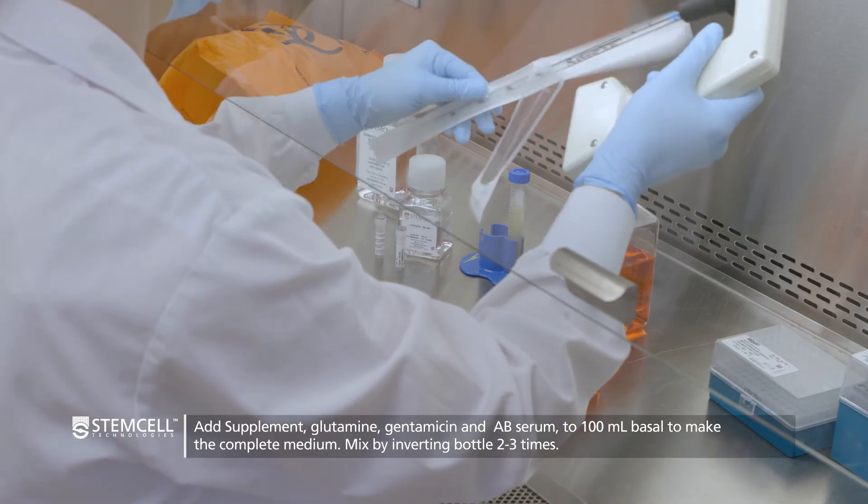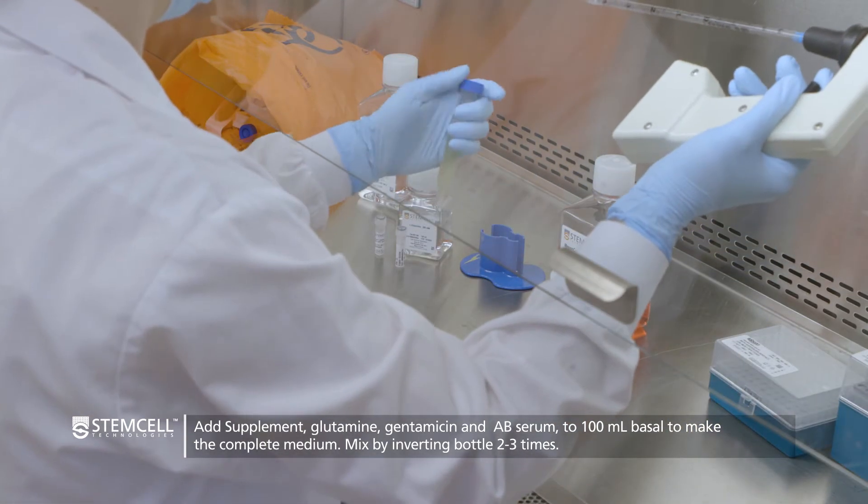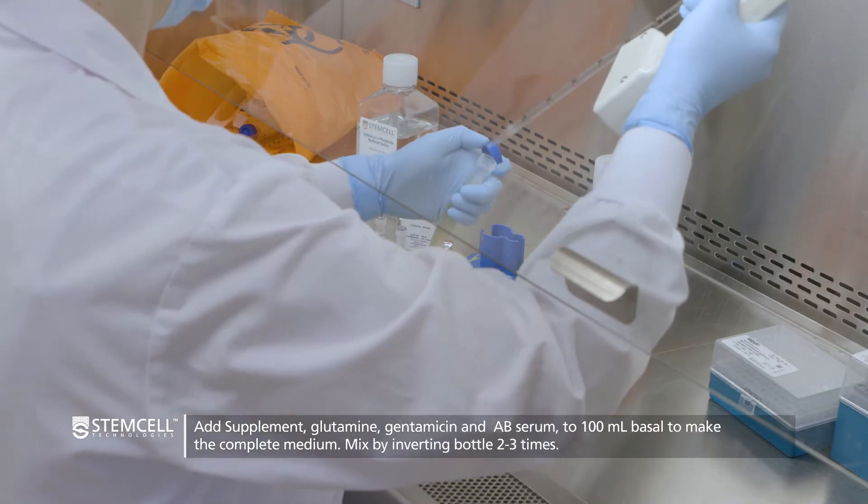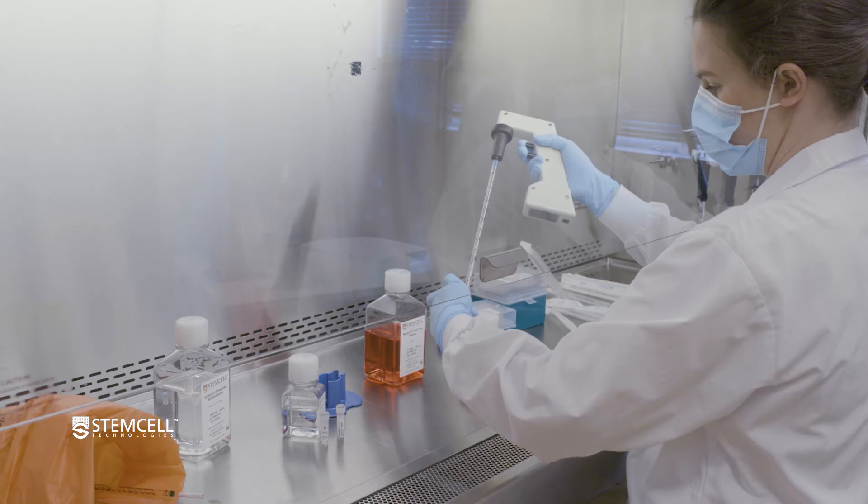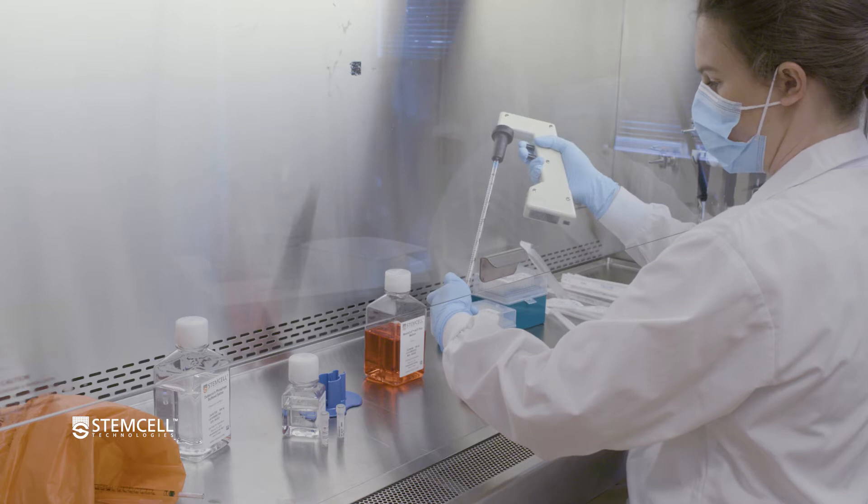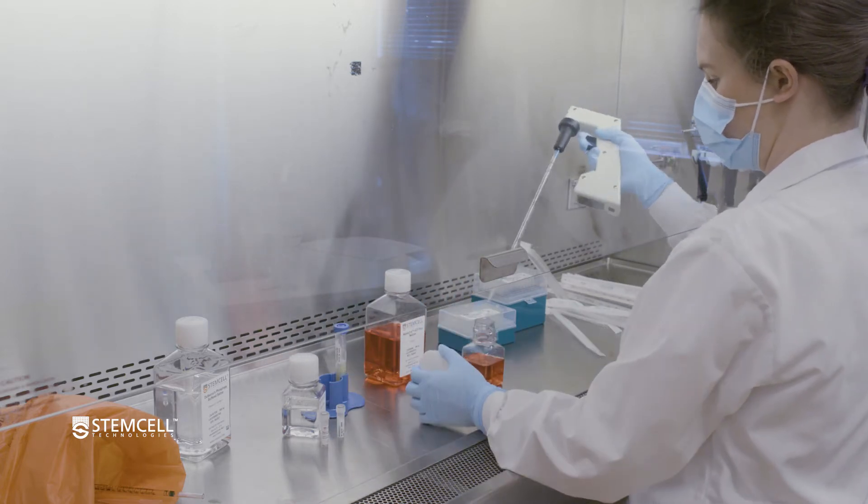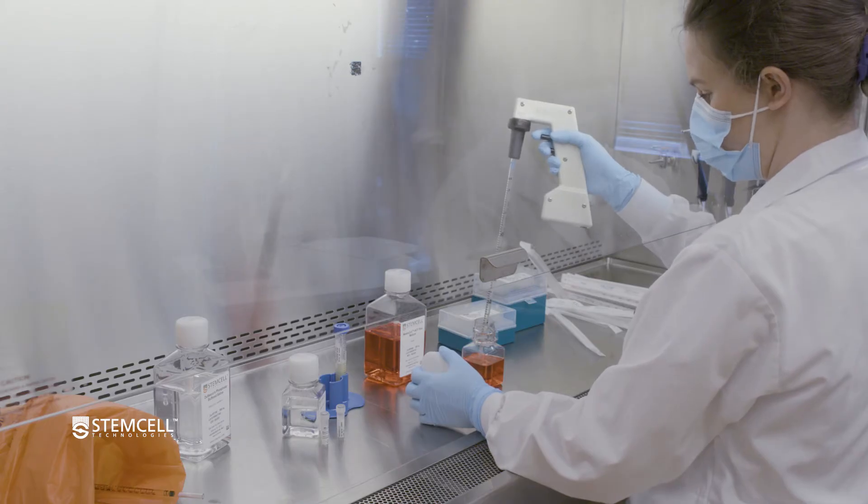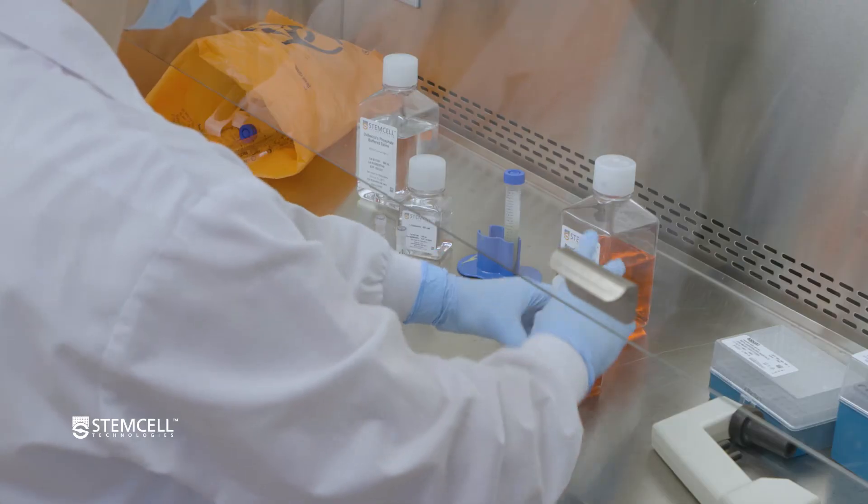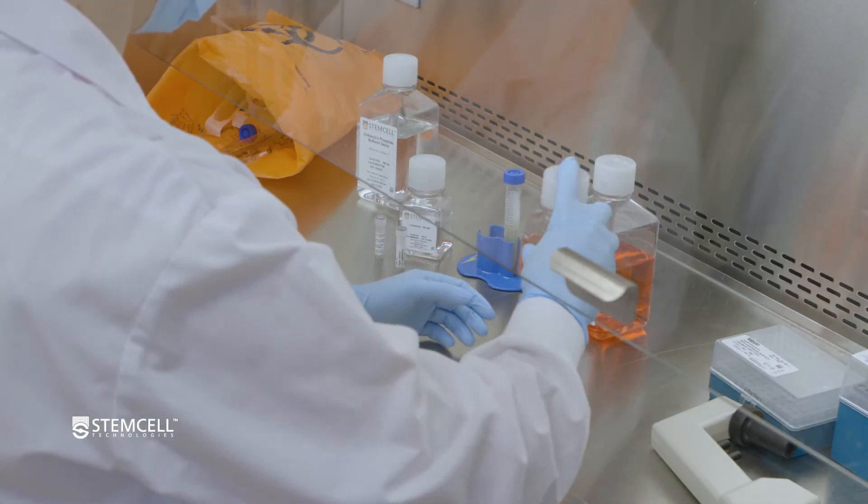Add 2.5 milliliters of Human AB Serum for highest yield results. If you are not adding AB Serum, top up to 100 milliliters with an additional 2.5 milliliters of MesenCult ACF Plus Medium. Mix by inverting the bottle 2 to 3 times.